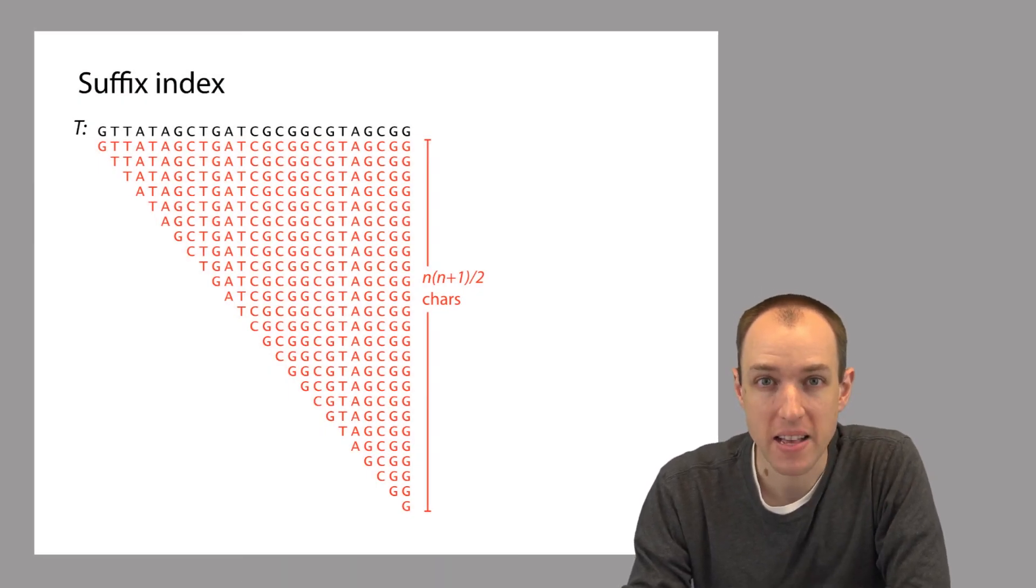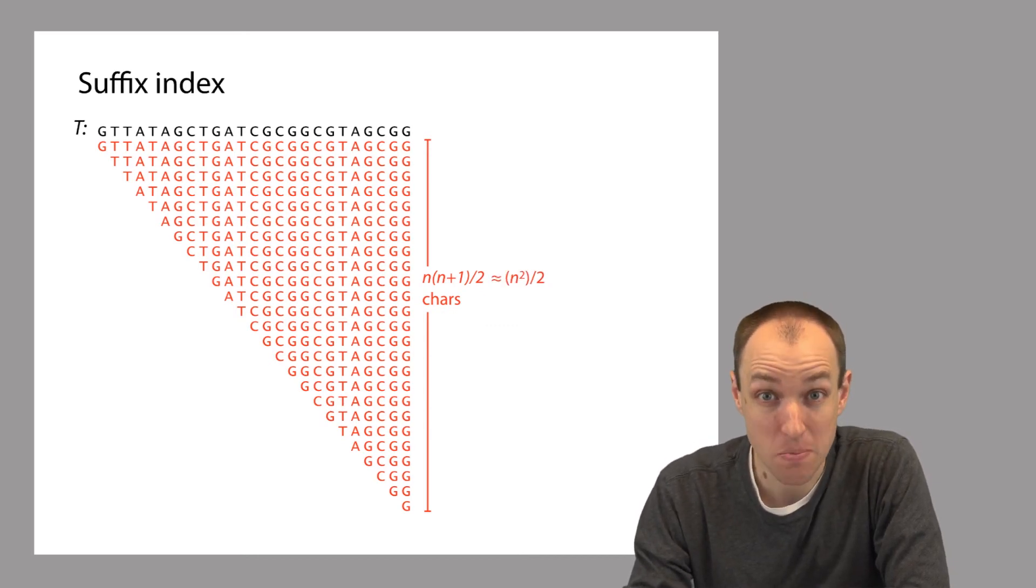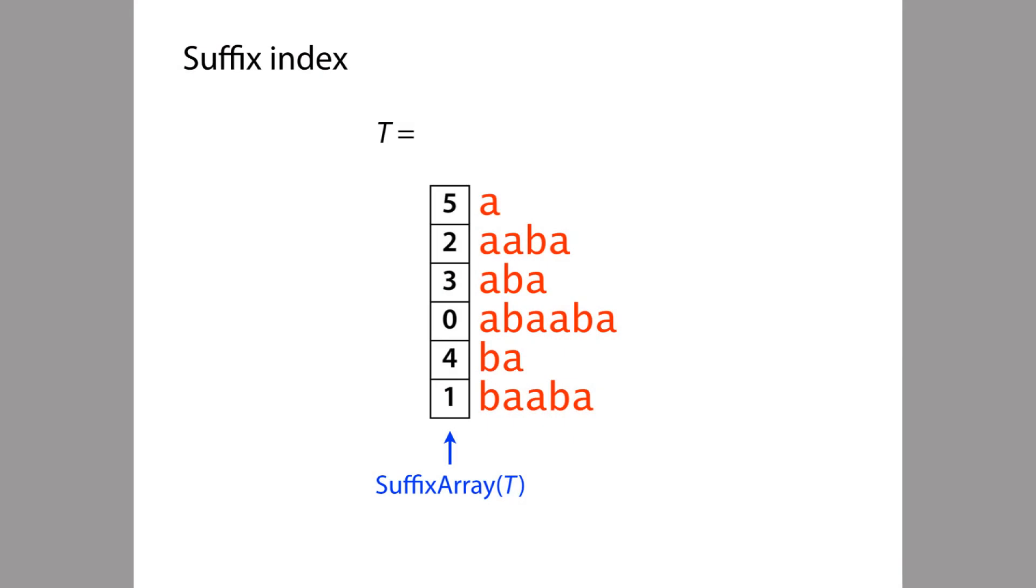But in fact, we can sidestep this issue with a simple trick. So specifically, we can represent a suffix of the genome by its offset into the genome. Instead of representing it explicitly as a string, we can represent it as just one integer that tells us the offset with respect to the beginning of the genome. So for example, what do I mean? So here are all the suffixes of a text, and they're in alphabetical order. And then listed to the left of those suffixes is a list of integers. And each integer corresponds to that suffix's offset with respect to the beginning of the text. So if the text is abaaba, then the very first suffix alphabetically is the one that consists just of the character a, and that's the suffix that's at offset 5. And so if we do this for all of the suffixes, we can represent all those suffixes in order, in alphabetical order, with just a list of integers. And this list is called a suffix array.